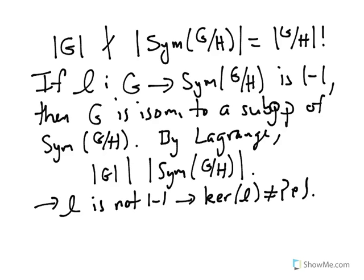So what? Well, we know, this is key here, we know that the kernel of L is a normal subgroup of G. And if G has a normal subgroup which is not the identity, then that's going to imply that G is not a simple group.